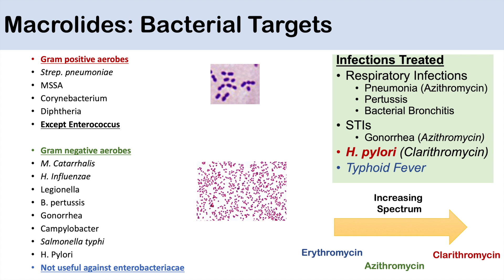In general, the macrolides all have similar targets, but because erythromycin was the oldest one, modifications to its original structure produced azithromycin and clarithromycin, which have an increased spectrum of targets. As we move from erythromycin to azithromycin to clarithromycin, the spectrum of activity against bacteria has increased.